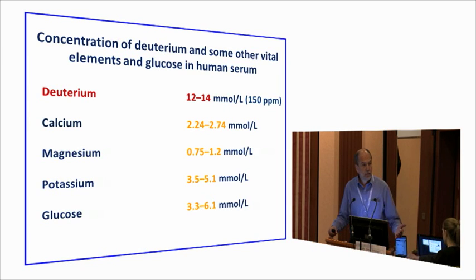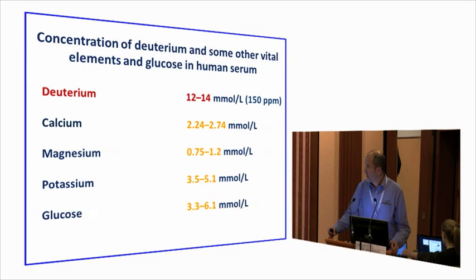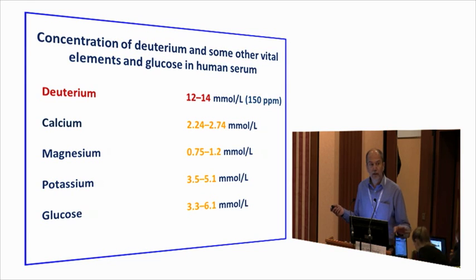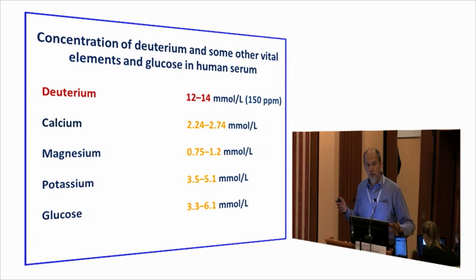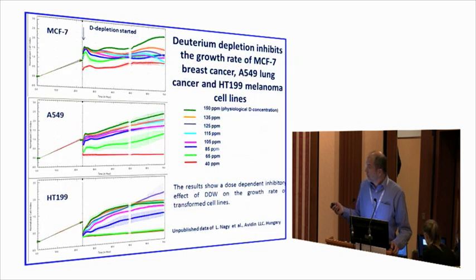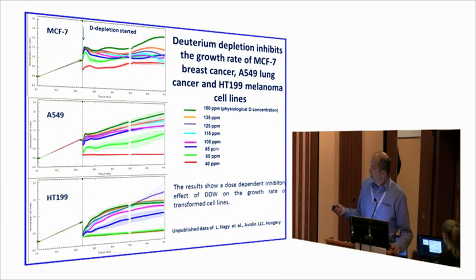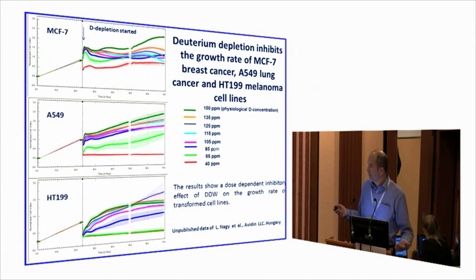To follow the cell growth in different deuterium-depleted water, we used the most developed technique. The cells were growing on a gold layer and we don't need to label or manipulate the cells — just following how the impedance of this gold layer is changing, which was correlated with the growth rate of the cells. We prepared media from 150 ppm to 40 ppm. The question was whether there is a relationship between the deuterium concentration of the media and the cell growth.